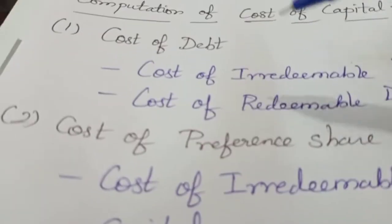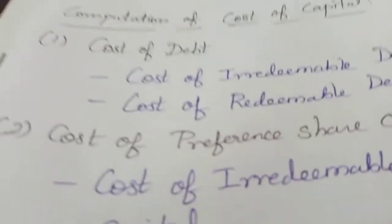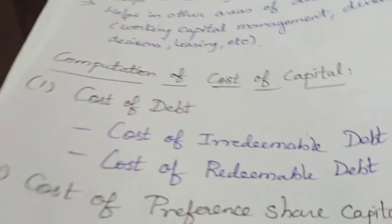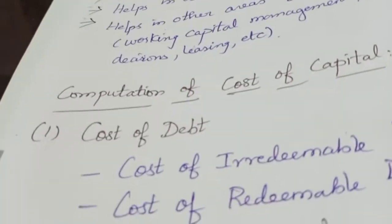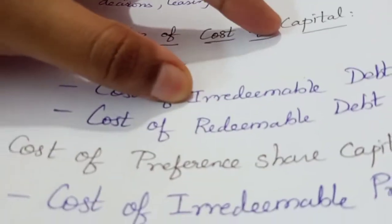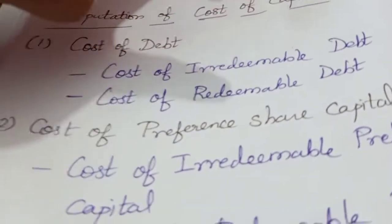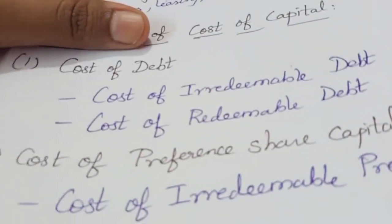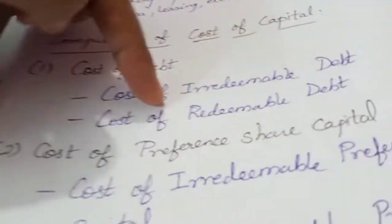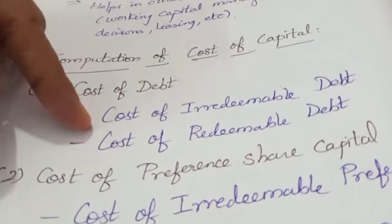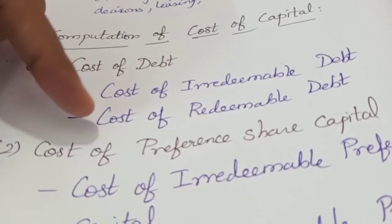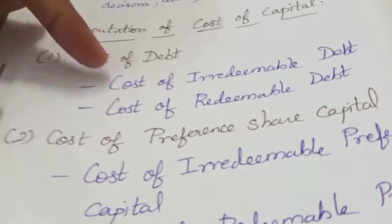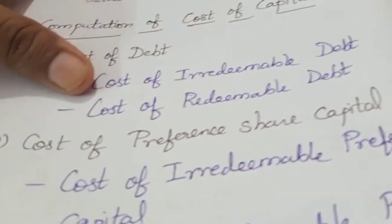Since you have a financial plan, you may or may not want to repay. If you do a repayment after maturity, it is redeemable. We will work out two types of problems: cost of irredeemable debt and cost of redeemable debt.